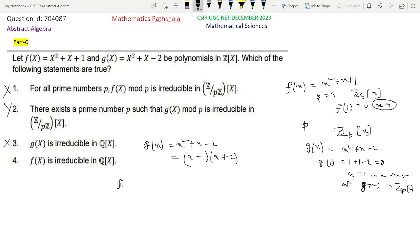Now look at option 4: f(x) = x² + x + 1, and clearly all the two roots of f(x) are complex. So f(x) cannot be expressed as a product of two degree 1 polynomials. The only expression possible is 1 times this.